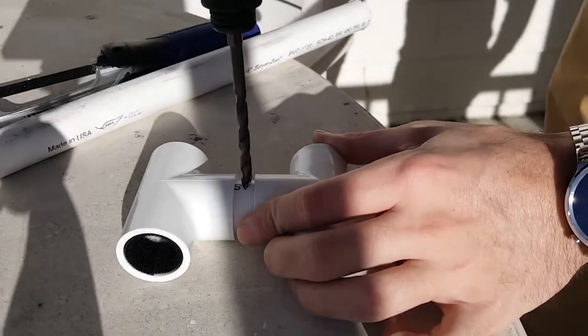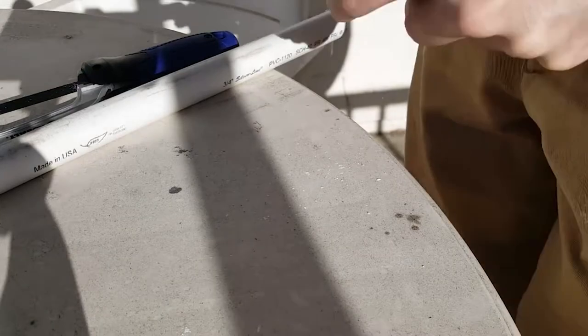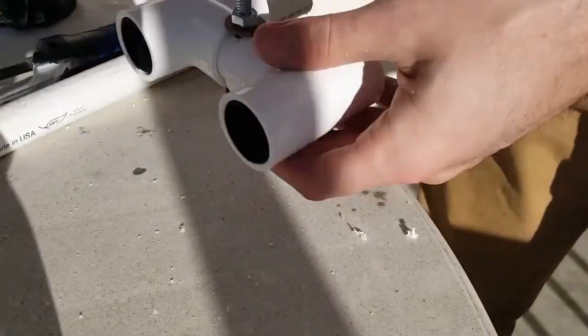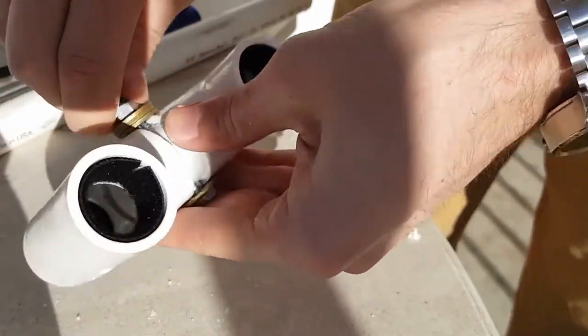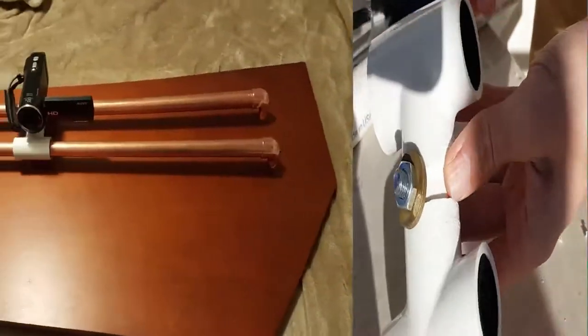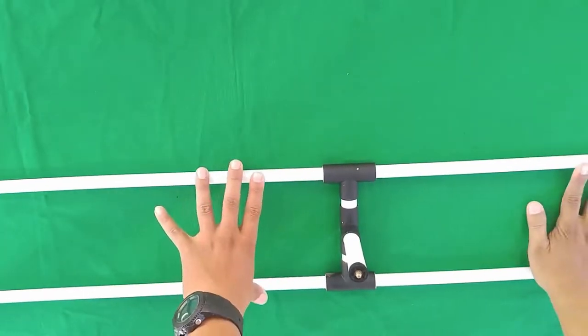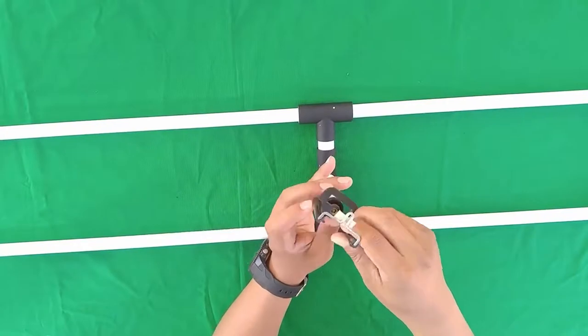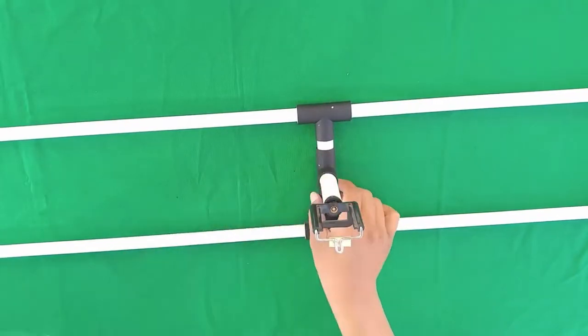If you search online, you can find numerous tutorials for building a camera slider. However, most of the tutorials make use of copper or PVC pipes to keep the cost low. But the problem is the deforming of the pipes over a period of time and resulting in bad shots again.